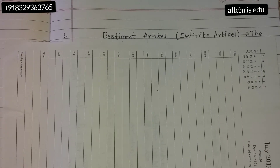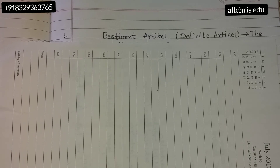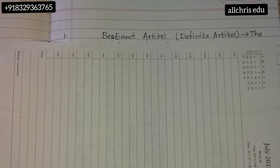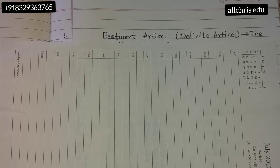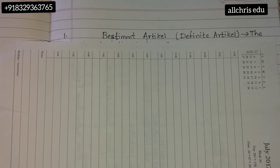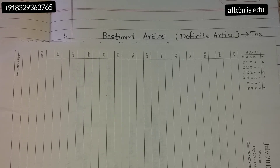The first one is bestimmter Artikel. Whenever you are doing this rule chart, you should first know the concept of it properly. I have made videos on the concept — you should be thorough with that. Everything written in that video should be in your classwork or homework notebook, and then the rule chart comes.